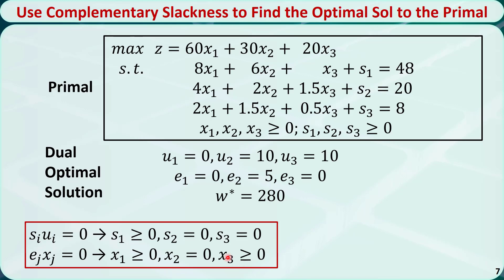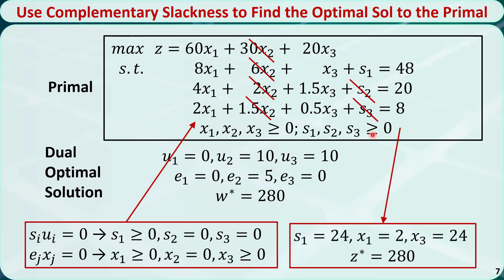Now we know S2, S3, and x2 are all 0. Let's plug these zeros back into the primal problem. We will have a system of three equations with three unknown variables. We solve the system of equations and obtain the values of S1, x1, and x3. Plugging them into the objective function, we get z* = 280.